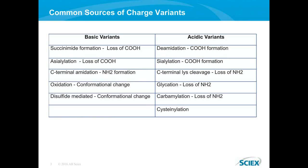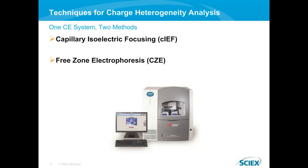Charge variants do occur in IgGs and proteins. Shown on this slide, I have some of the most common causes of basic and acidic variants. You can see on the left-hand column the most common basic variants listed, as well as acidic variants on the right-hand side. Capillary isoelectric focusing is able to determine basic and acidic variants and give rise to the ability to determine if you may have any of the listed variants shown here.